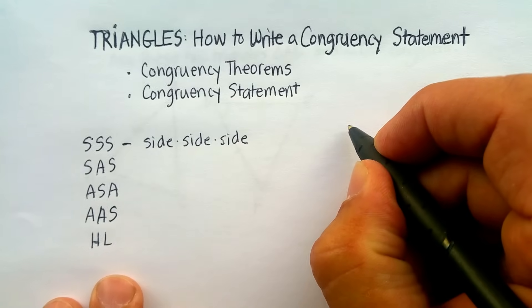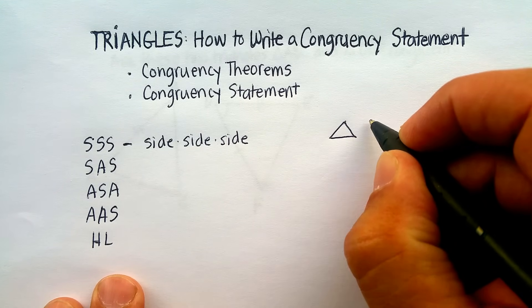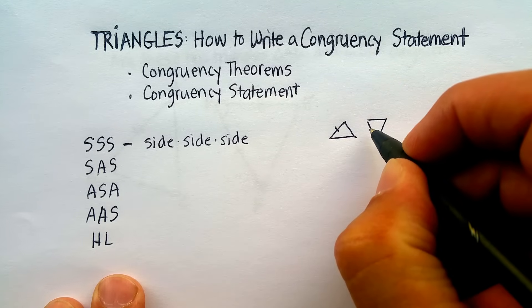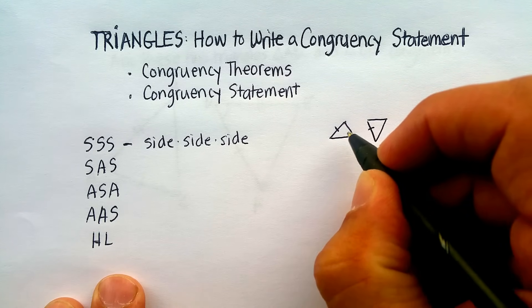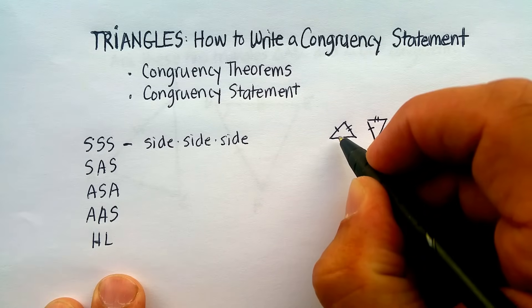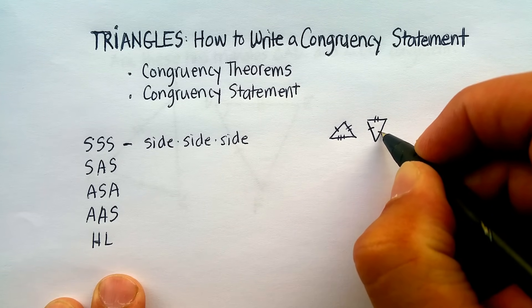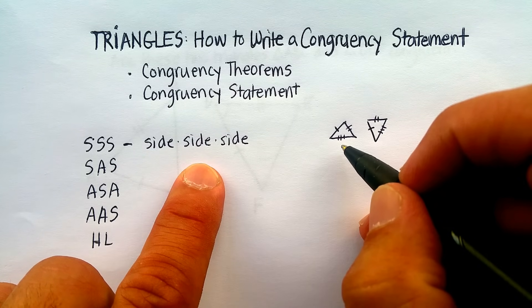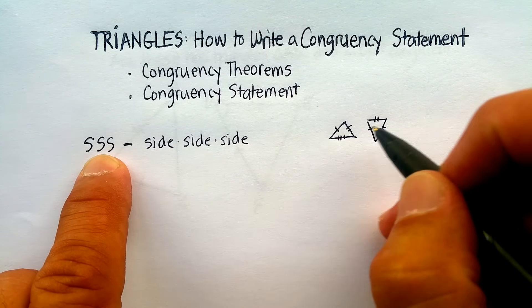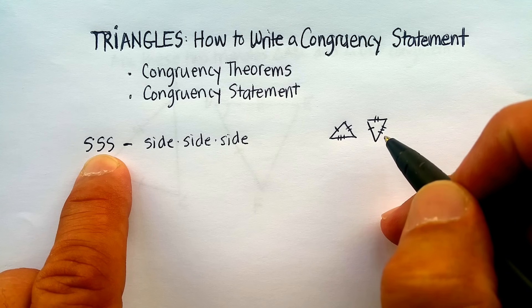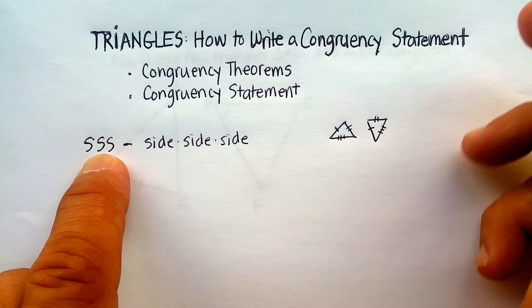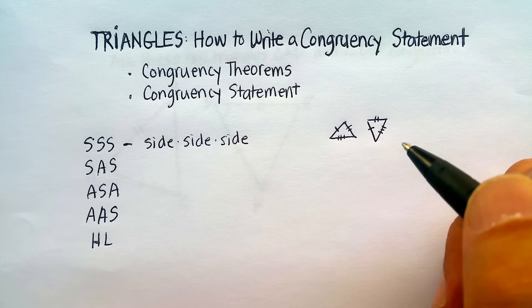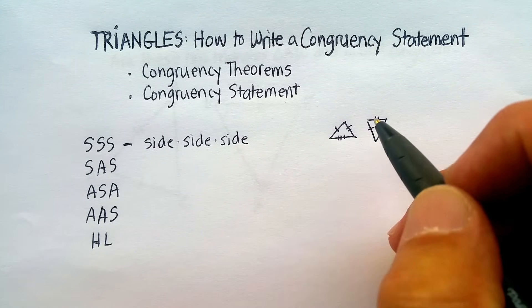So for example, if I had this triangle and this triangle here, and I know that that side is congruent to that side, this side is congruent to this side, and this side is congruent to that side, then I can say by the side, side, side congruency theorem, these two triangles are equal or congruent. That means all the angles are the same inside, the corresponding sides.